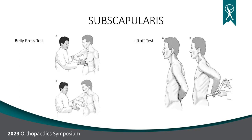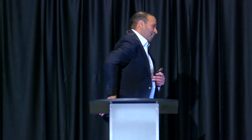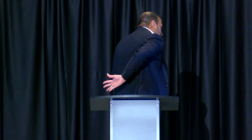For the subscapularis, we have two press tests: the belly press and the liftoff test. The belly press — you bring their hand onto the abdomen and ask them to bring the elbow forward and push back. If the subscapularis is compromised, their elbow will droop behind rather than pulling back directly. The liftoff test uses the same concept but goes behind the back, asking them to pull their hand further behind them.